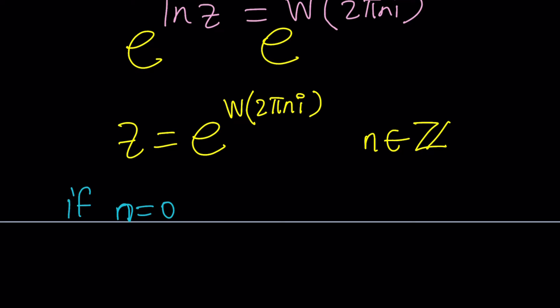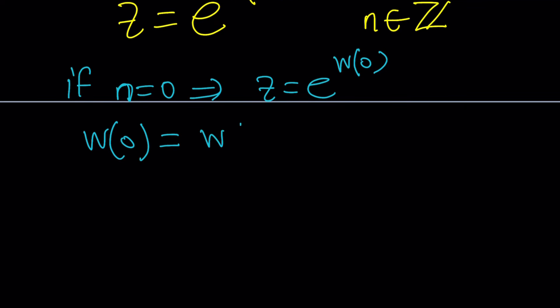So if n is equal to zero, then we get z equals e to the power W of zero. What is W of zero? How do you apply Lambert's W function on zero? Let's take a look. Definitely we can write zero as zero times e to the power zero because e to the power zero is one and zero times one is zero, right? And this gives us zero because look at this, this is my t e to the t, and in this case t happens to be zero so the outcome or the output is zero.